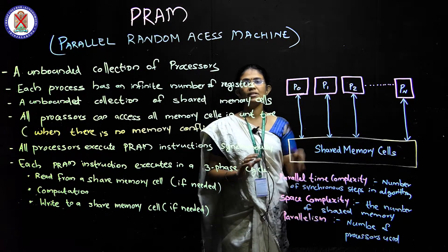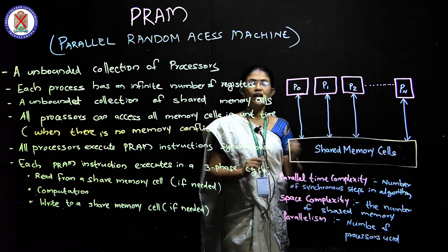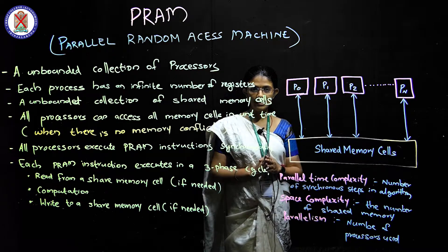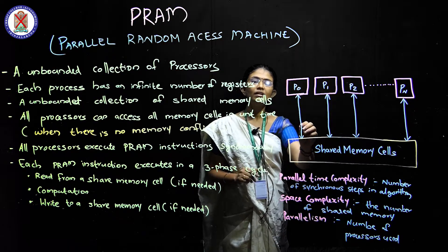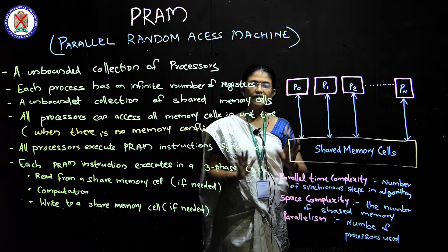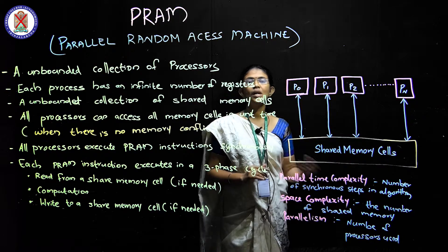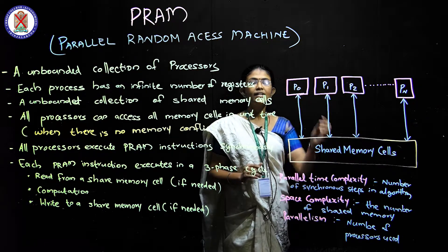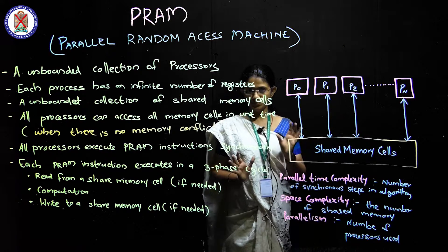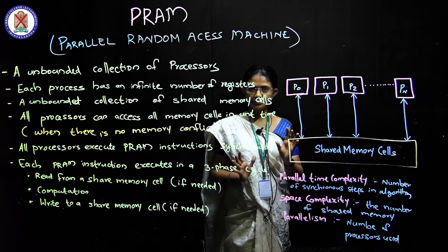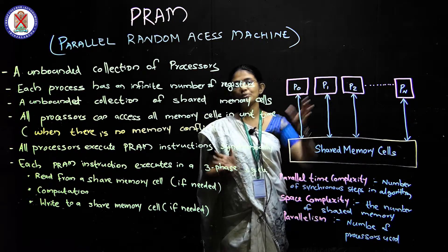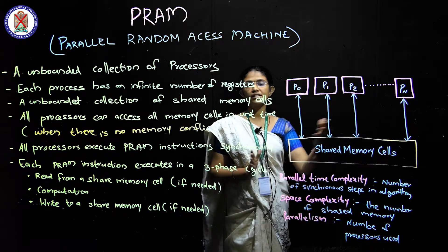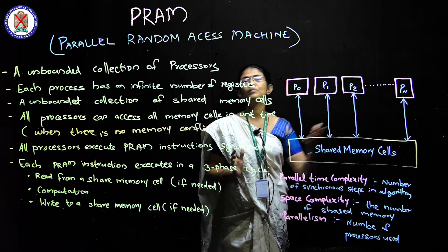For example, P0 is one of the machines at a memory location. We are going to write. Then we have P2, which is another machine, and we are going to read. So P0 and P2 are going to communicate — that's why we are communicating through processes.